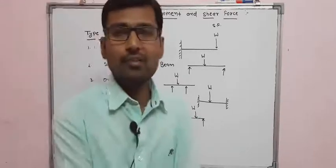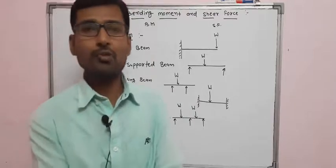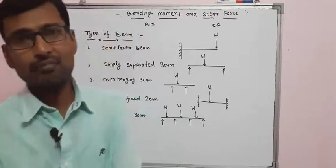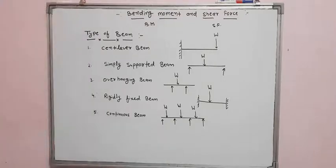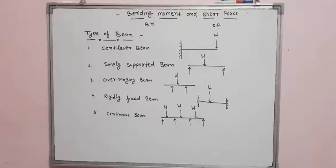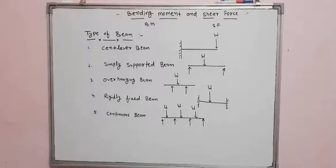First of all, moment is the force into perpendicular distance from the axis. Bending moment is the moment of all vertical forces about the section. After that, shear force — the algebraic sum of all vertical forces about the section or any point is called shear force about that section.